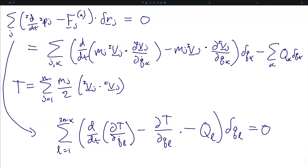A key concept is that the generalized coordinates are independent — they form the minimal coordinate set describing the system, so each q_l can be varied separately. Every term in the summation must individually go to zero for the whole summation to be zero. We have arrived at something that looks like the Euler-Lagrange equations, written as a function of kinetic energy and generalized forces. Even though this is a scalar set of equations, it is based on inertial velocity vectors — you can never get away from working in an inertial frame.